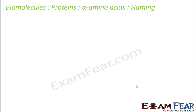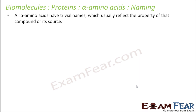How do we name amino acids? All amino acids have trivial names which usually reflect a property of the compound or its source. It is very difficult to remember the names of all 20 amino acids because they do not follow a regular pattern. Some are named based on their properties; others are named after the substance from which they were first discovered.